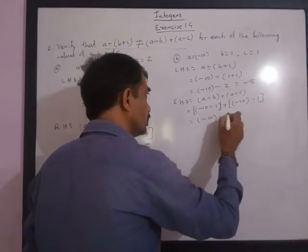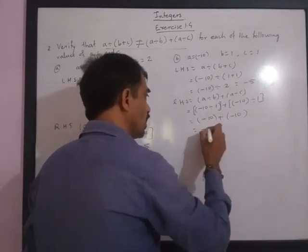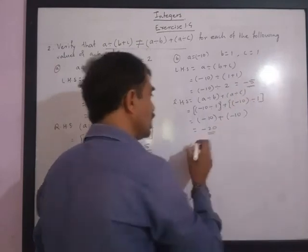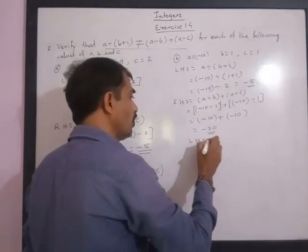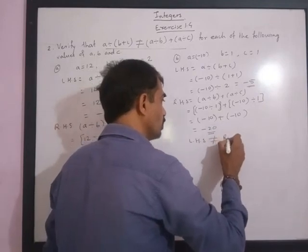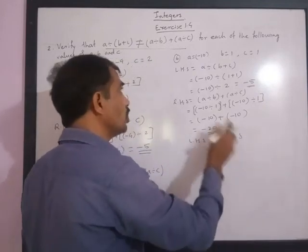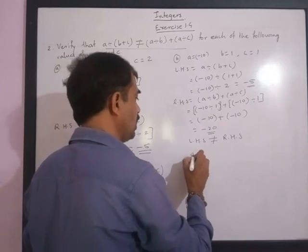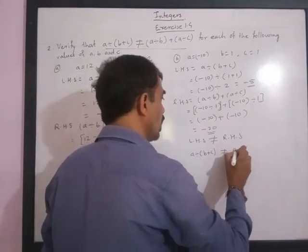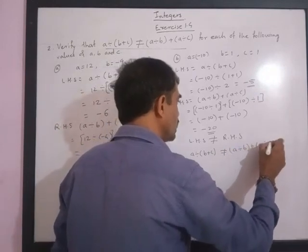Now RHS is a divided by b plus a divided by c, which is negative 10 divided by 1 plus negative 10 divided by 1. If any integer is divided by 1, we get the same integer. So this is negative 10 plus negative 10, which equals negative 20. Left hand side is negative 5 and right hand side is negative 20, so LHS is not equal to RHS. Therefore a divided by bracket b plus c is not equal to a divided by b plus a divided by c.